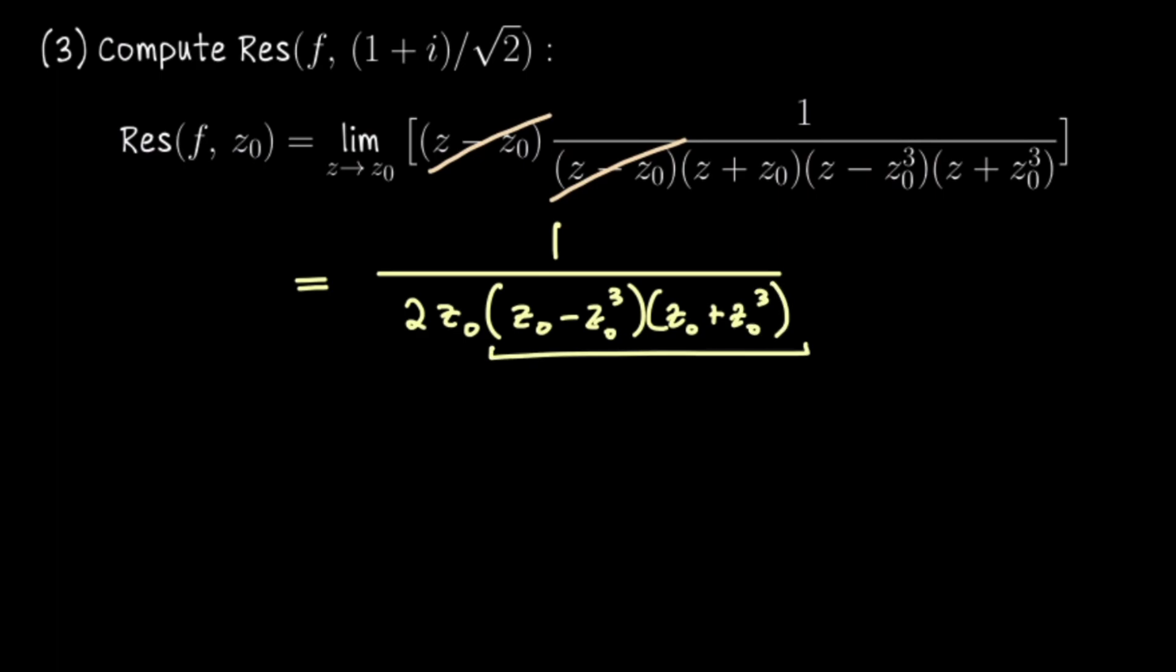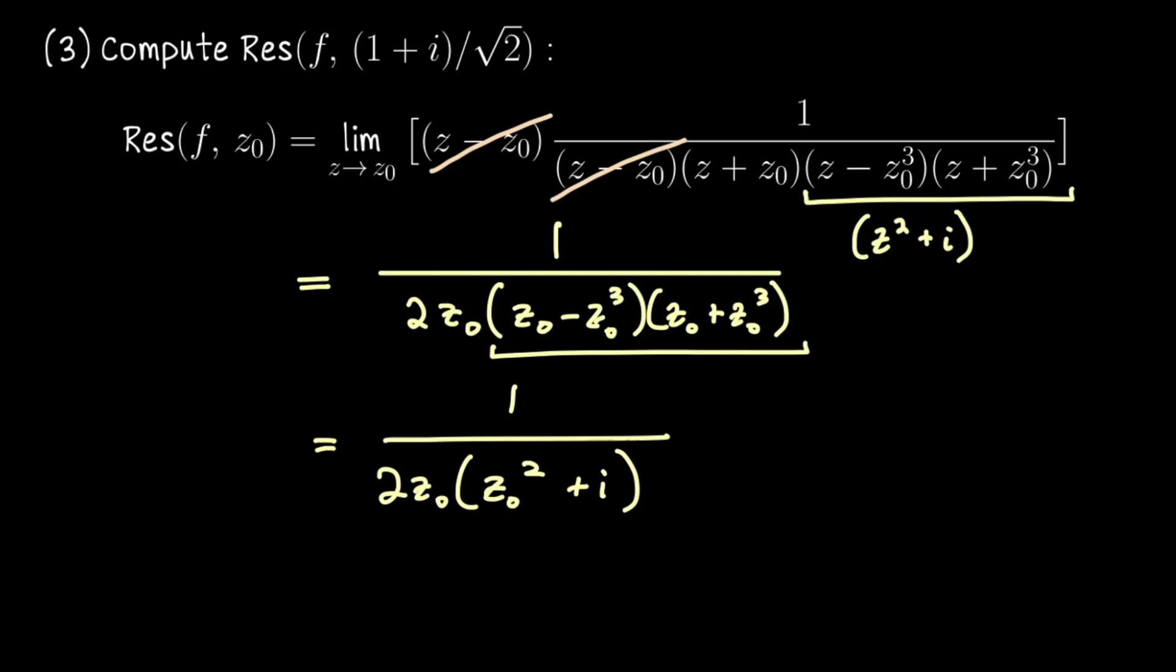This simplifies in fact it probably would have simplified more easily if I'd taken these latter two terms here and left them as z squared plus i. What we have is one divided by two z naught z naught squared plus i which you could also get by fully expanding this. All right one last thing to do here z naught squared that was rotation by pi over 4 and then rotation by pi over 4 again. This puts us at i so that z naught squared plus i is 2i. So we can write this as 1 over 4i z naught. You could of course simplify this further but I'm going to leave it there for now because I think it might make adding the two residues easier at the end.